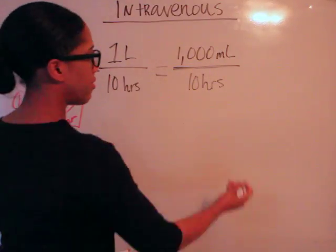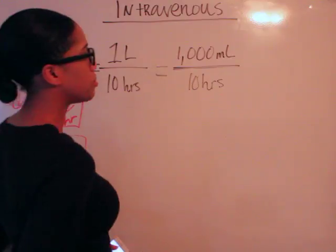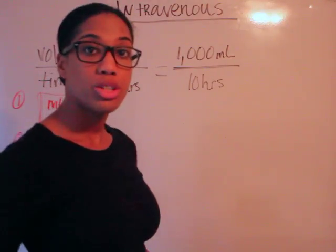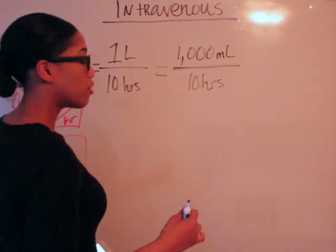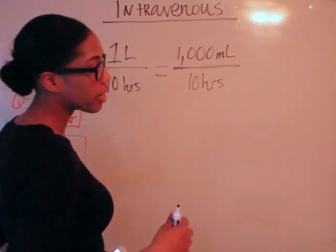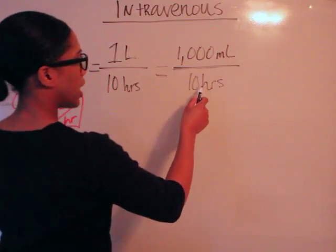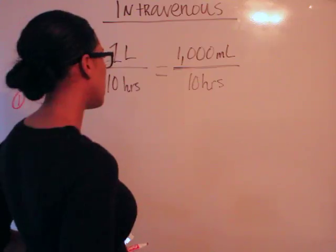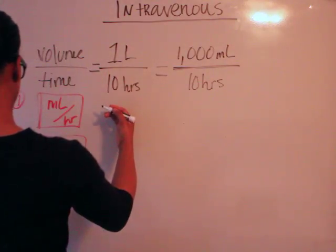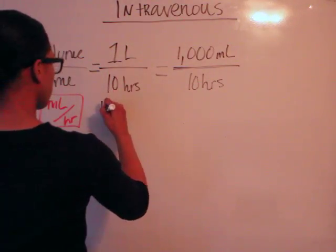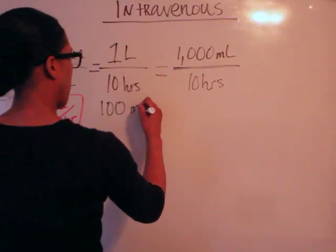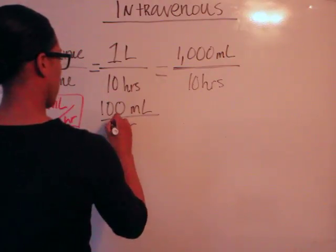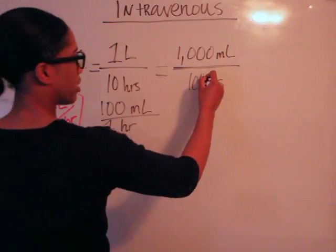So basically here we can go ahead and divide the 10 hours into 1,000 milliliters, or if you want to break it down into ratios and solve for the variable X, you can do that. But for time's sake, we're going to just use our calculator. We're going to say 10 hours into 1,000 milliliters is going to give us, let me make sure of that.